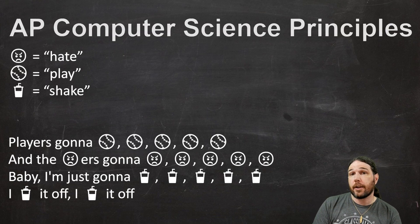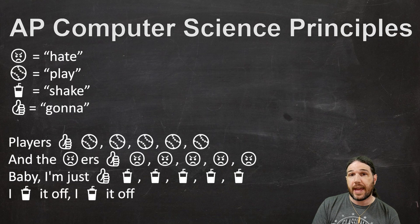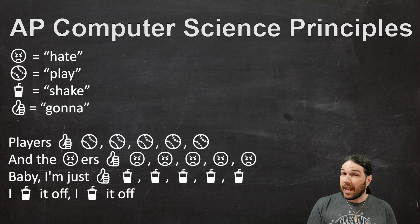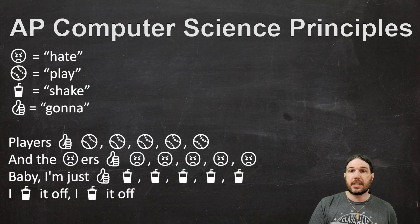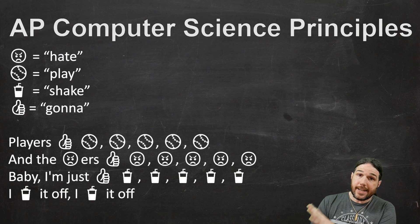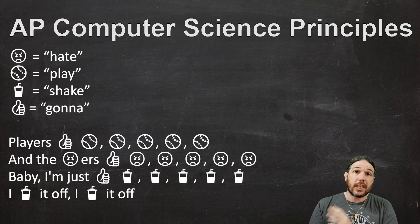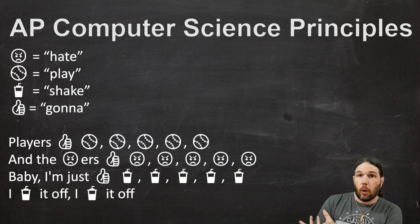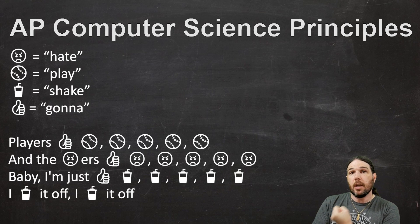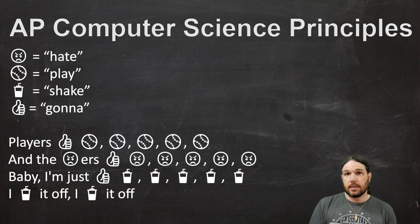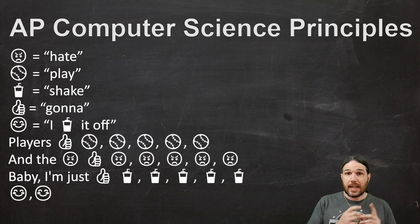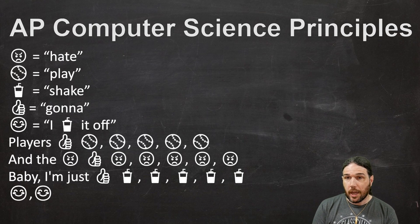I noticed the word 'gonna' is in there a few times, so we can go ahead and replace that with an emoji. And finally, I think this is pretty cool — we can even make a definition that uses one of the other symbols. For example, at the end there, I see 'I shake it off, I shake it off,' and especially at the end of the song she says that over and over again. So if we could just take that whole sentence and make it one symbol, we could save even more space. I'm gonna make a definition where this smiley face means 'I' and then the milkshake emoji and then 'it off.' Yes, I know it's a soda emoji and not a milkshake emoji — I'm doing my best here, just work with me.